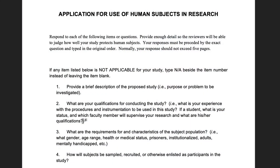Here is the IRB document — the application for use of human subjects in research. This document needs to be filled out before you can do anything with subjects, even recruitment. You need to get the study approved before any recruitment. If you want to do a study this semester, get moving on this quickly. It can take a couple of weeks to review, though survey research can often use an expedited form and get approved quickly.